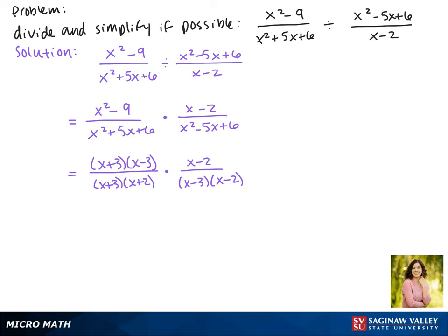Now that everything is factored we can cancel. So in the numerator and the denominator we have an x plus 3. We also have an x minus 3 and an x minus 2.